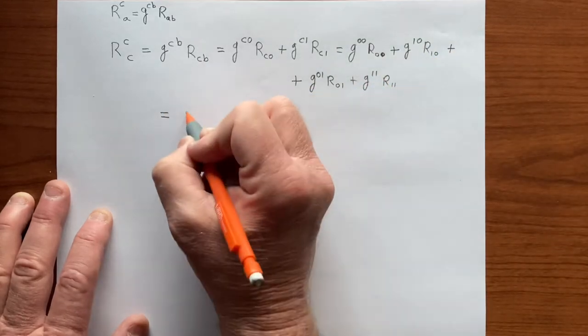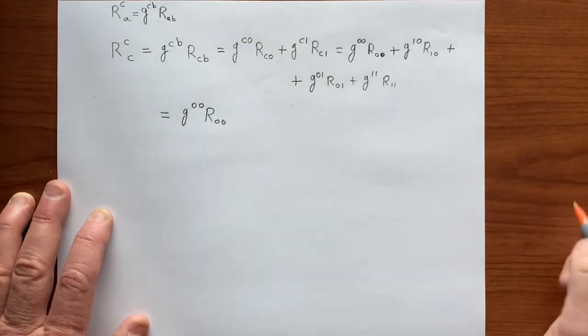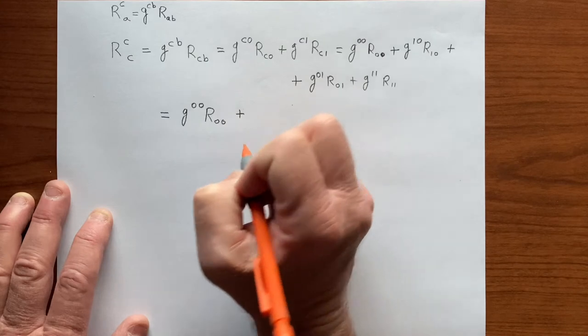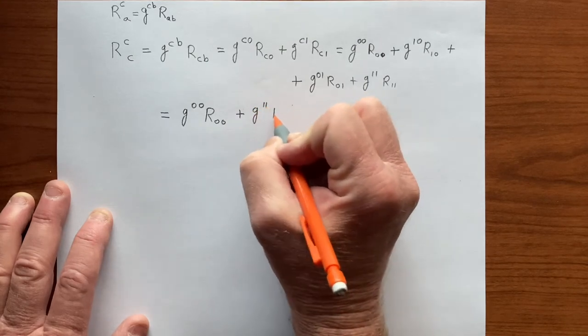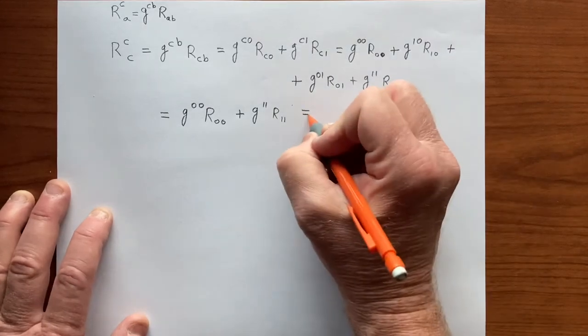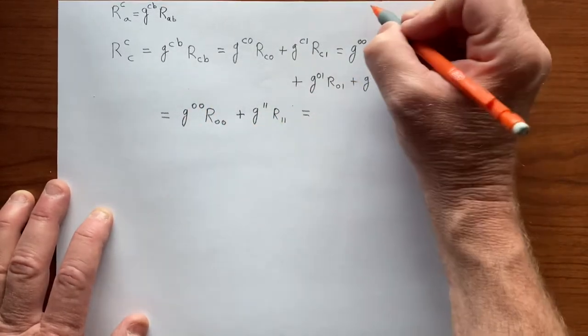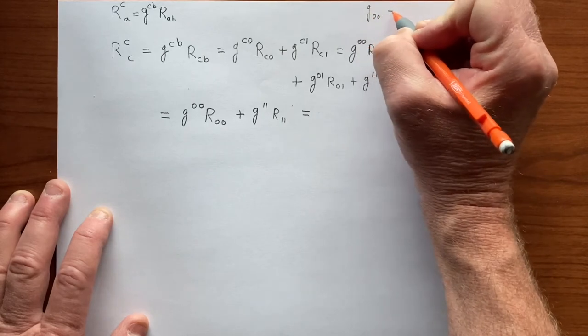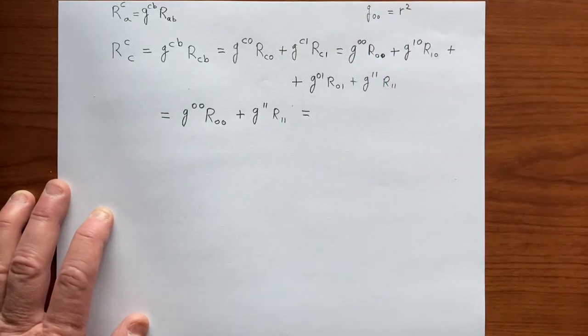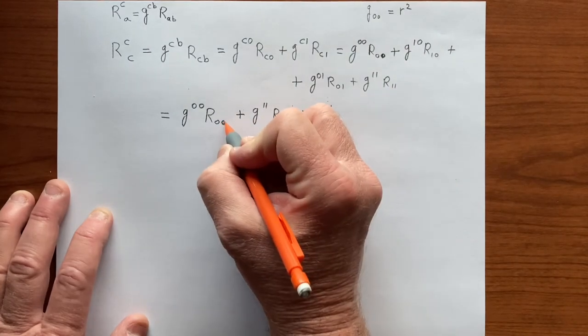Which in our case reduces to G^00 R_00 plus G^11 R_11. And that's G^00 is the inverse of G_00, which is R squared, so that's 1 over R squared times R_00.